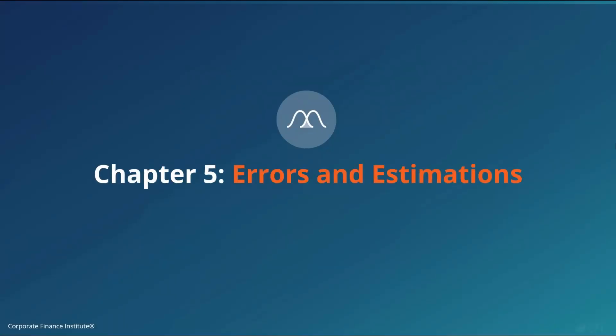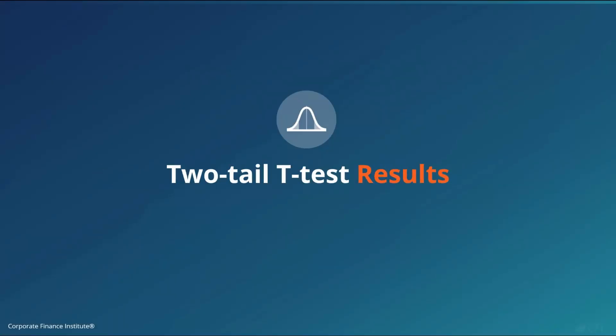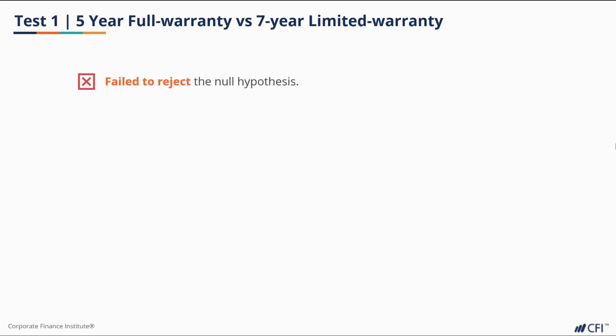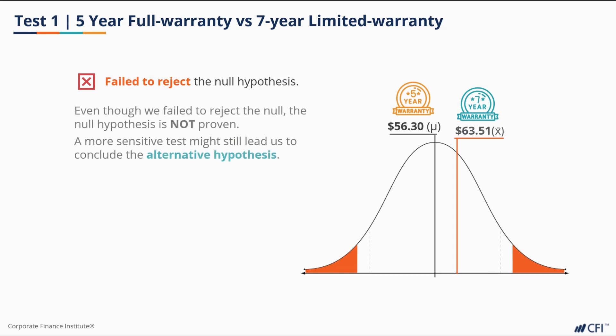In chapter 4, we performed two tests. Our first test was between two different types of warranties, and our second test was between having the five-year full warranty and no warranty. In our first test, we failed to reject the null hypothesis. This doesn't mean that the null hypothesis is true, just that any differences between the distributions of the two populations weren't detectable in our samples, at least to a degree that we could feel confident about. We might be worried that there is a difference, and our test just couldn't detect it.